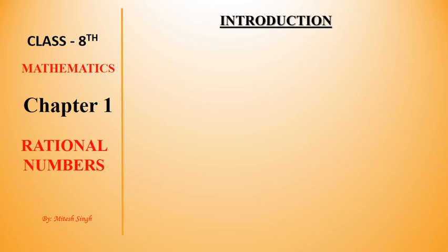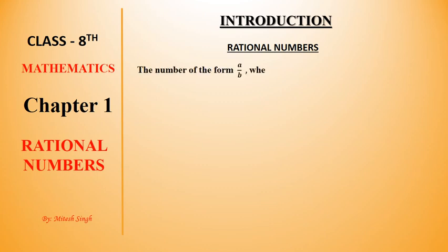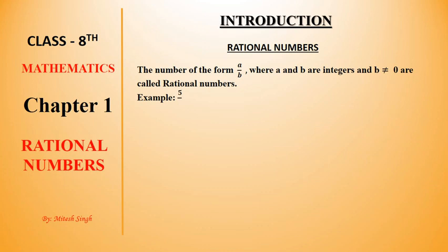First of all, Introduction. The first point is Rational Numbers. The number of the form A upon B, where A and B are integers and B is not equal to 0, are called Rational Numbers.